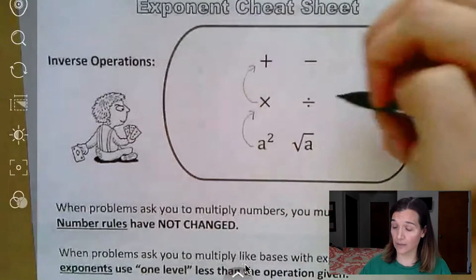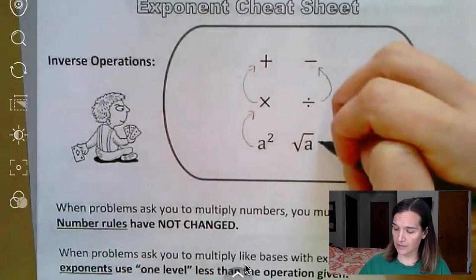The same thing is going to happen as we move to division. When it asks you to divide bases with exponents, the exponents actually get subtracted.